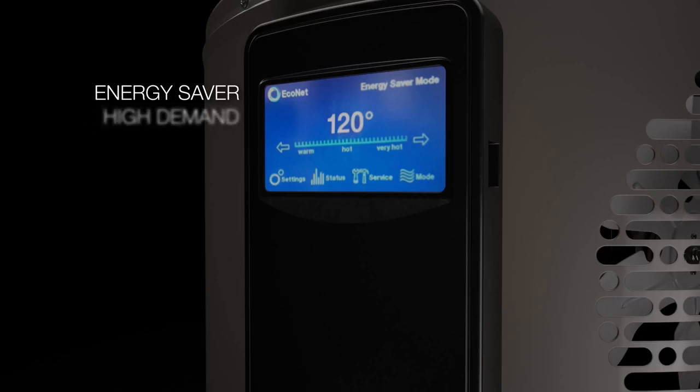In high demand mode, the heat pump and electric heat operation is utilized to optimize hot water delivery. In electric only mode, the heat pump is disabled and the appliance operates like a standard electric water heater.